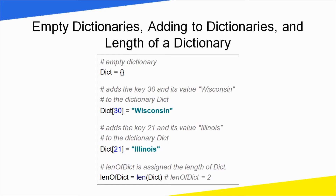Next, the length of a dictionary. The length of a dictionary is similar to a list — we use len() with the dictionary name inside. If we add two values to the dictionary, the length of the dictionary is 2.